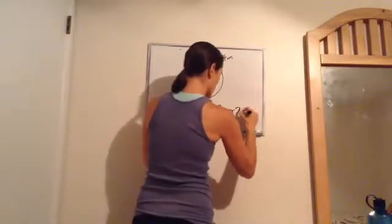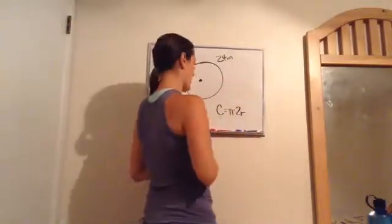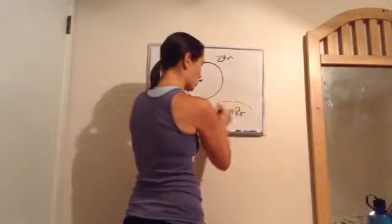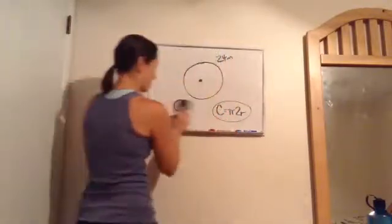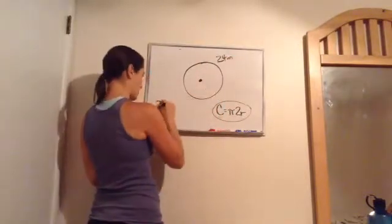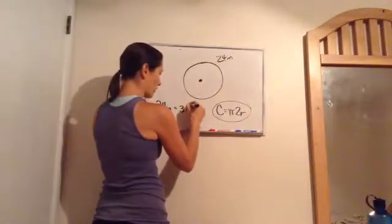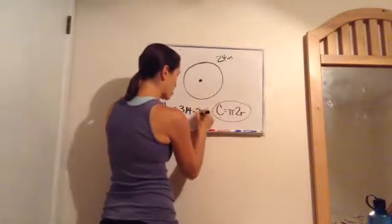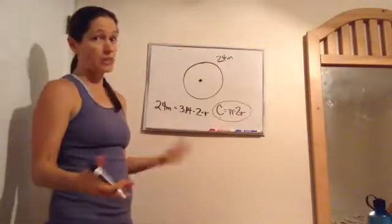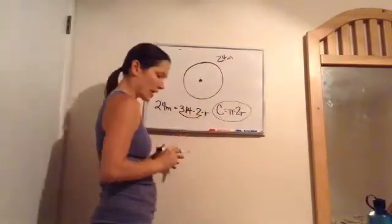Remember that C = πd, or C = 2πr. Since they're asking for the radius, I'll use C = 2πr. I know the circumference is 24 meters, so I write: 24 meters equals π, which is 3.14, times 2 times r. We don't know what r is yet, but we're going to find it.